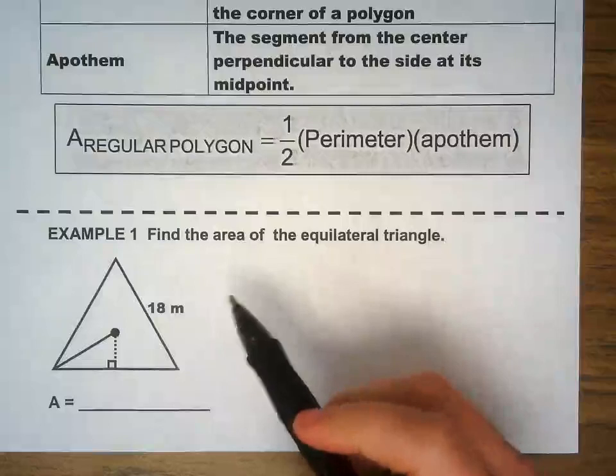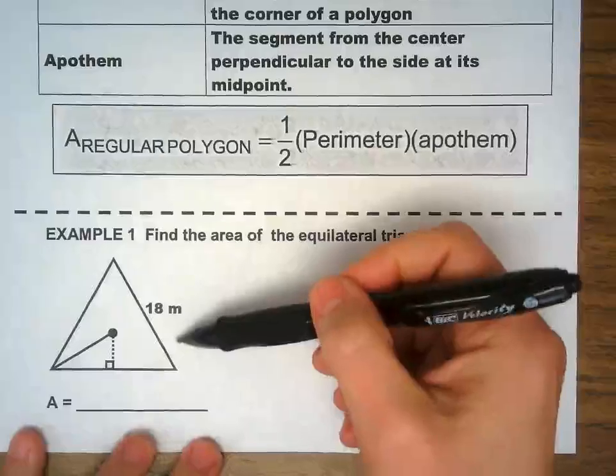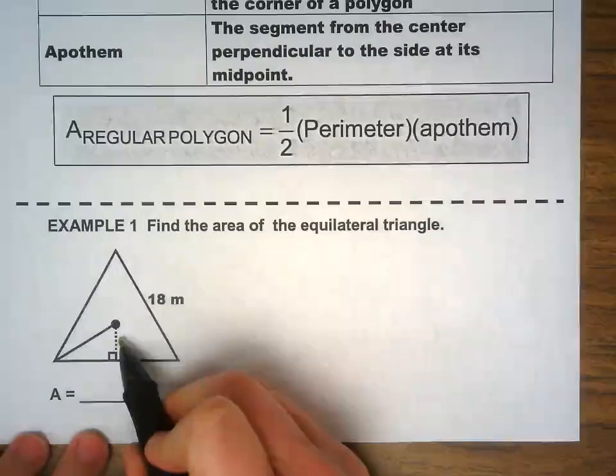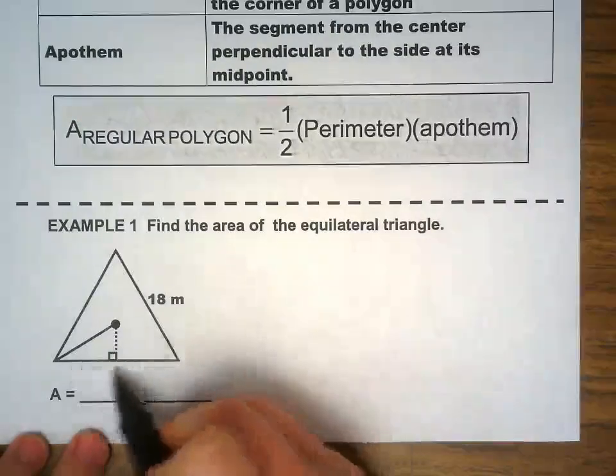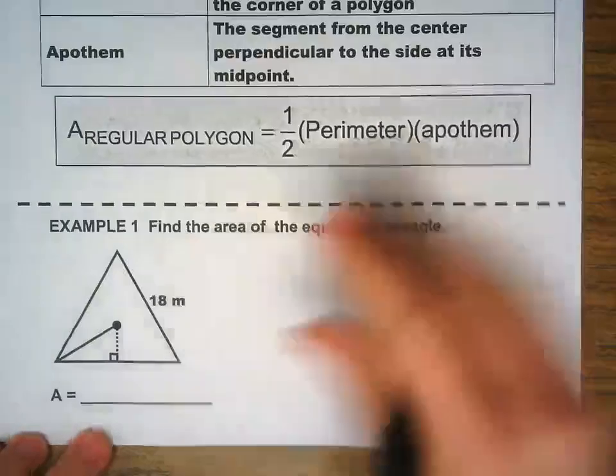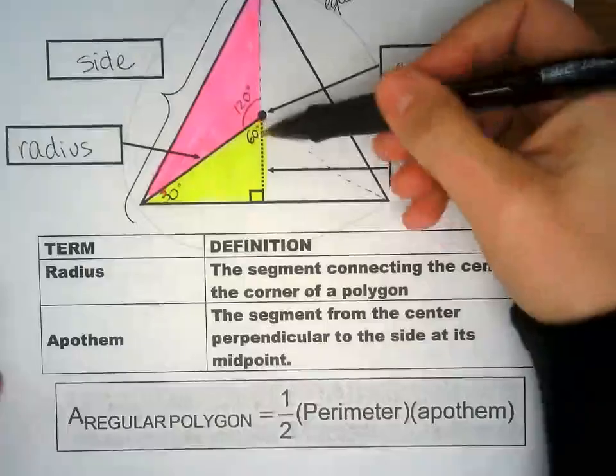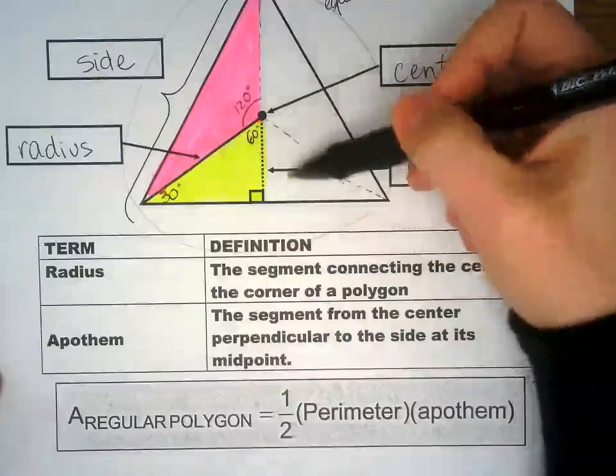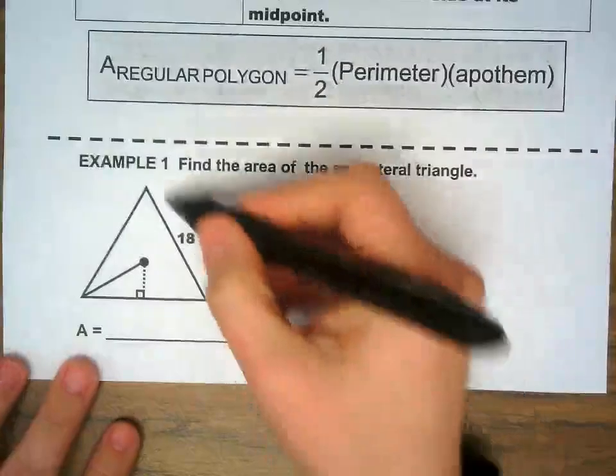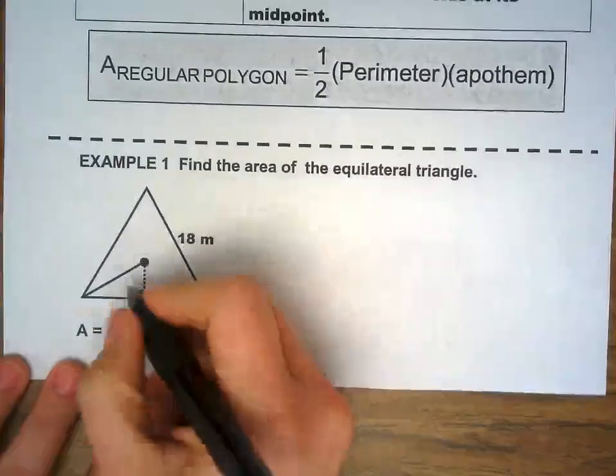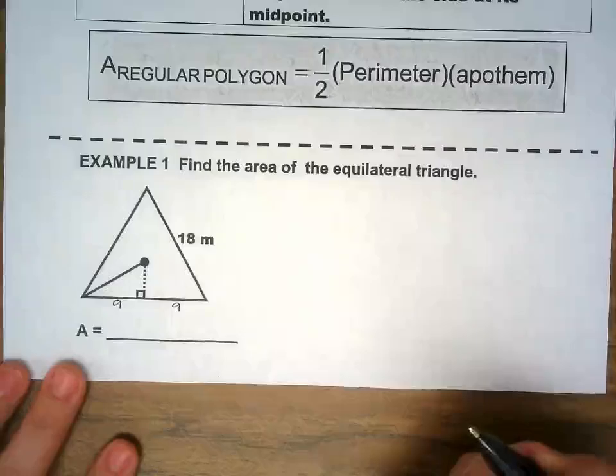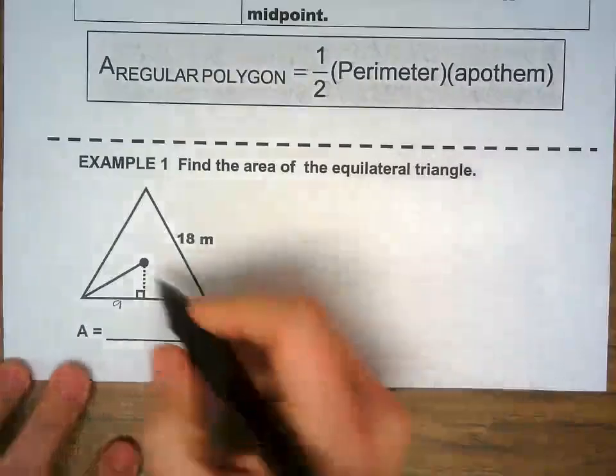First example right here, we have the side right there. We don't have the apothem. We don't have much. But we do know from our example right here that this cuts the triangle in half. So if the whole thing is 18, I have this part as nine because this one is also nine.